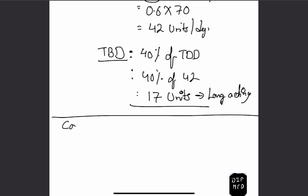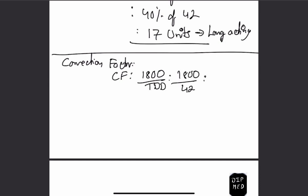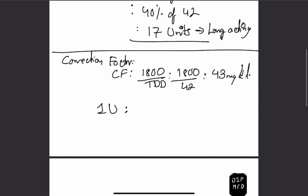The next thing we need to calculate is the correction factor, also called the insulin sensitivity factor. This tells us how much one unit of insulin will lower the blood glucose level in this patient. The formula is 1800 divided by the total daily dose: 1800 ÷ 42 ≈ 43 milligrams per deciliter. So one unit of insulin will lower this patient's blood sugar by 43 mg/dL.